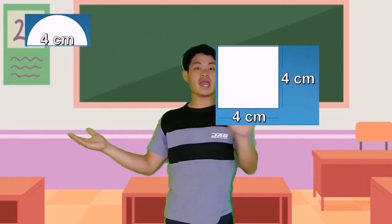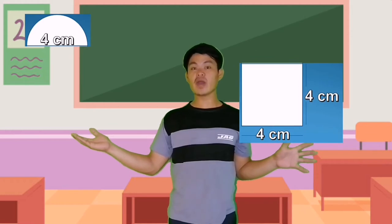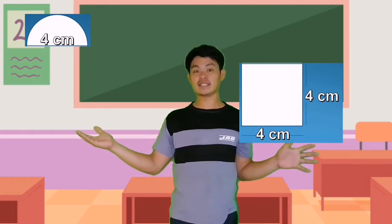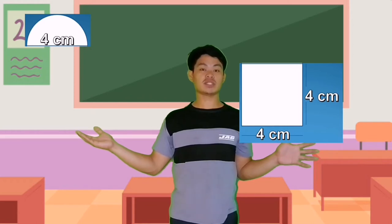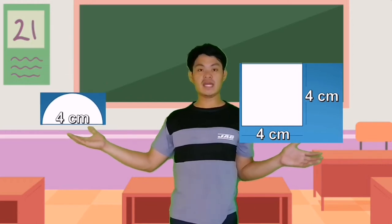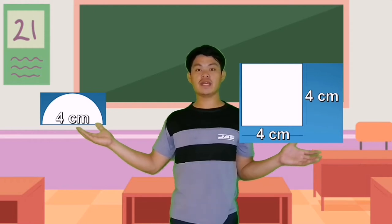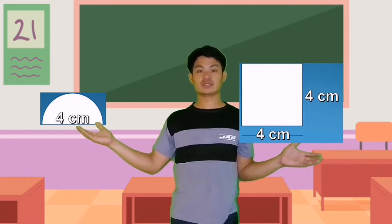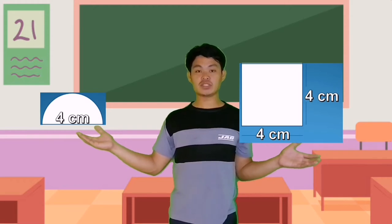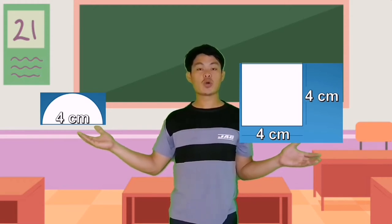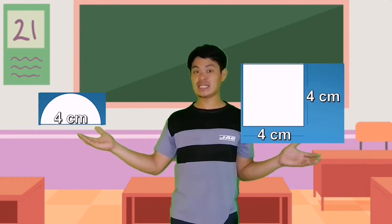For shape A, we have the square with a measurement of 4 cm on each side. For shape B, we have the half of a circle with a diameter of 4 cm. Since its diameter is one of the sides of the square, we have 4 cm as its diameter.